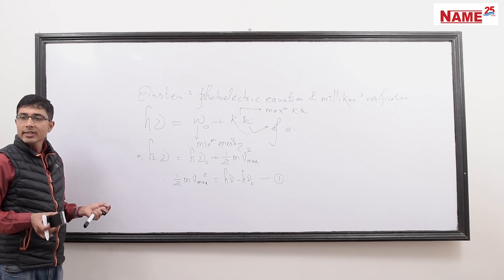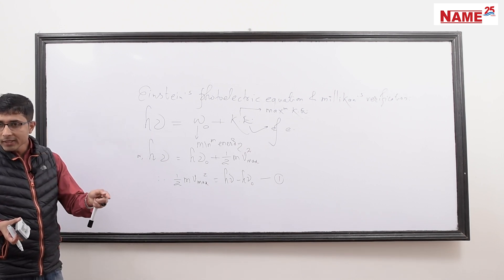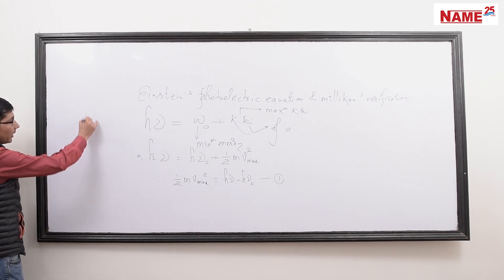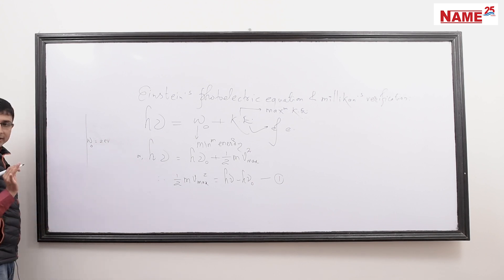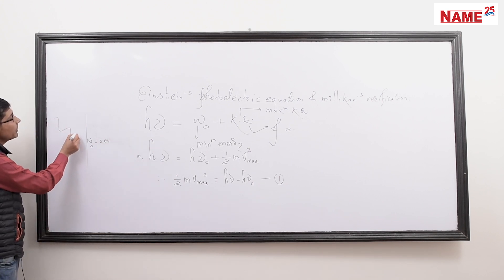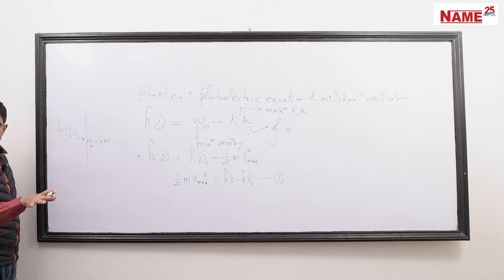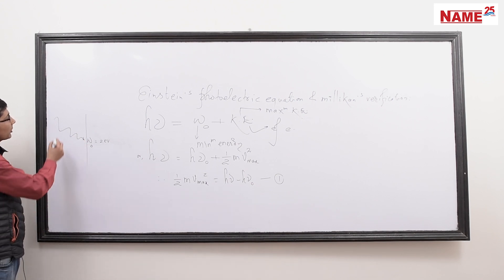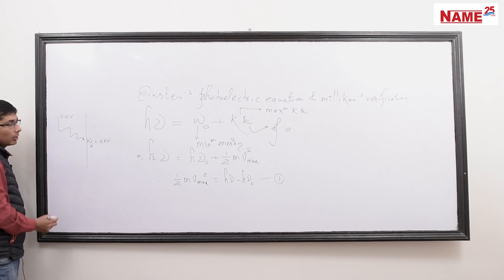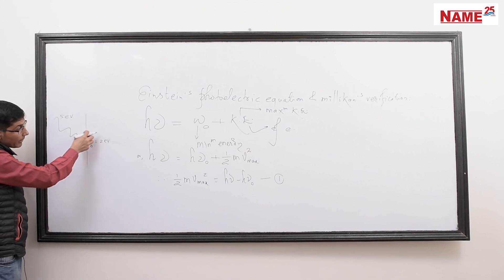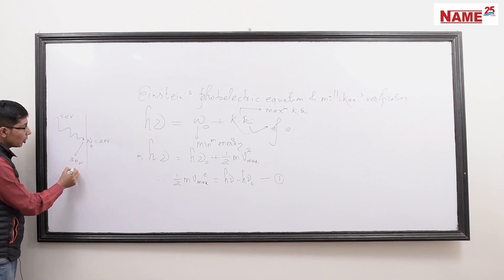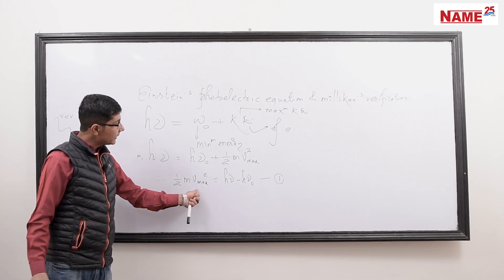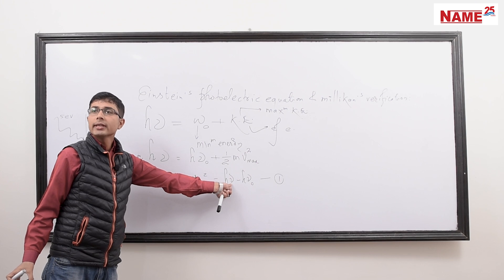Therefore, ½mv²max = hν − hν₀. This is equation 1. The electron's kinetic energy depends on two things: the energy of the incident photon and the work function. The work function depends on the nature of the metal — like sodium or copper. For example, if the work function is 2 eV and photon energy is 5 eV, then the kinetic energy of the electron is 3 eV.